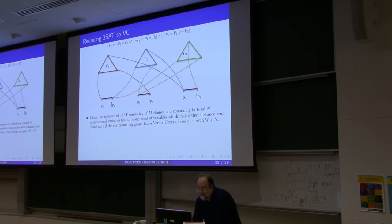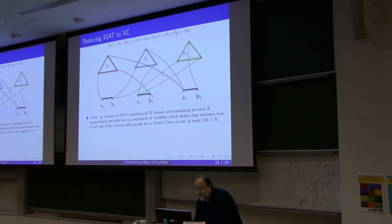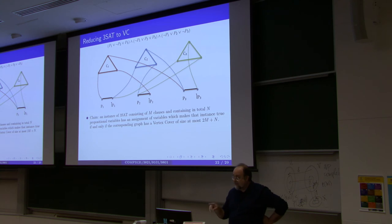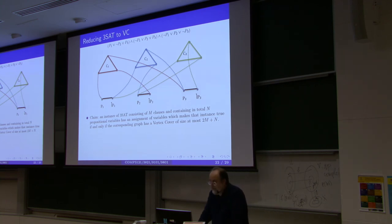To summarize: if something is a vertex cover, every triangle has exactly two vertices covered. Look at an uncovered vertex — it's connected to one end of a segment, and since it's a vertex cover, that end must be covered. We set the variable to true if its positive literal is covered. The uncovered end of each triangle's connecting edge guarantees a covered literal that makes that clause true, ensuring the formula is satisfied.